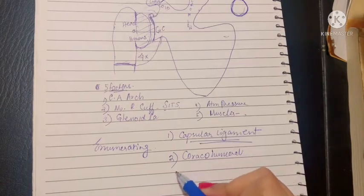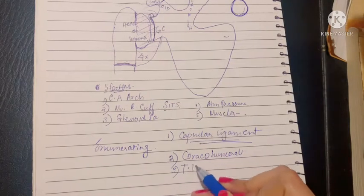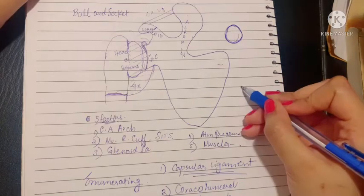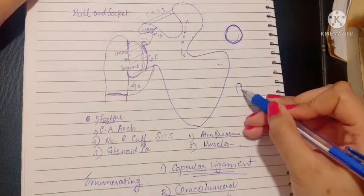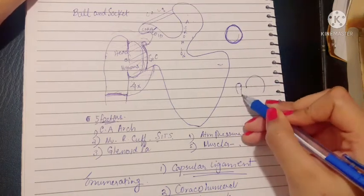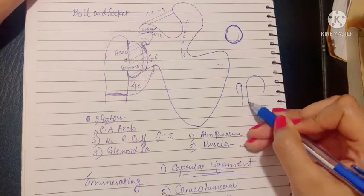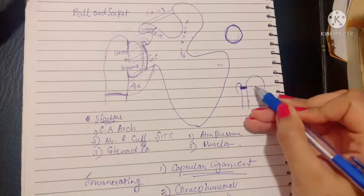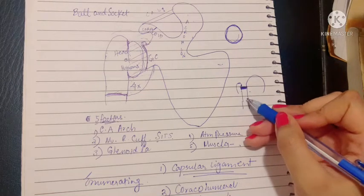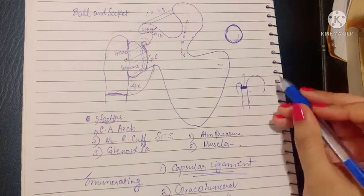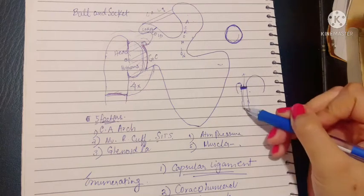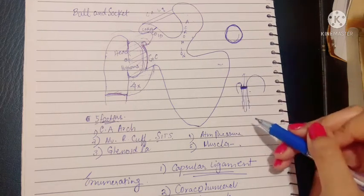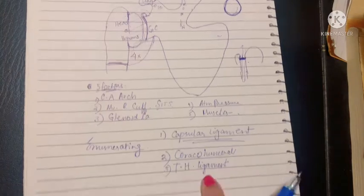Moving on, we have the transverse humeral ligament. We all know that the humerus has a lesser tubercle, a greater tubercle, and between these two is the bicipital groove. In the upper part of this groove, there is a ligament that is bridging the medial and lateral lips of the bicipital groove. This is known as the transverse humeral ligament. The long head of biceps brachii passes deep to this transverse humeral ligament, and it is a part of the shoulder joint.